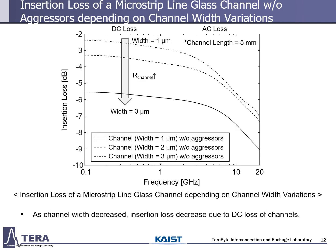This shows the insertion loss of microstrip lines of glass interposers depending on channel width variations. In the simulations, to check channel characteristics, we remove the aggressor channel. As shown in the figure, insertion loss increases due to DC loss of channels as channel width decreases. These features were similar in the stripline as well.